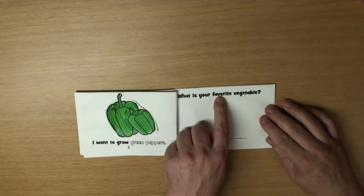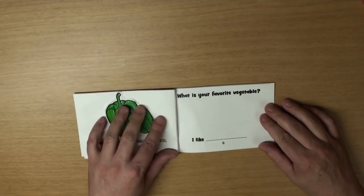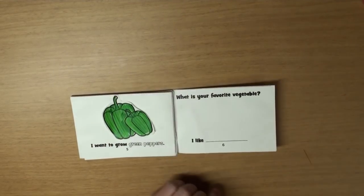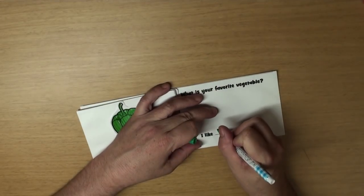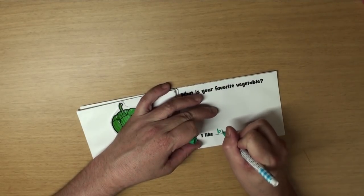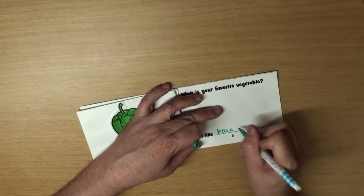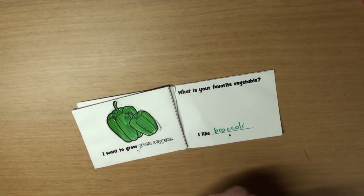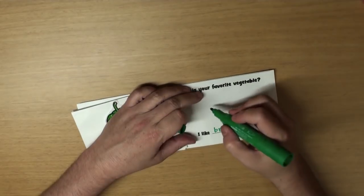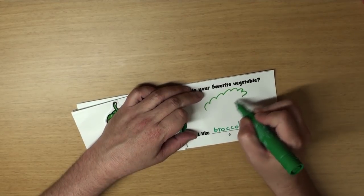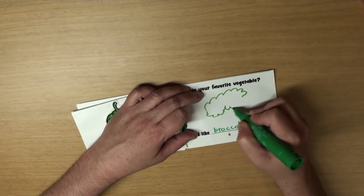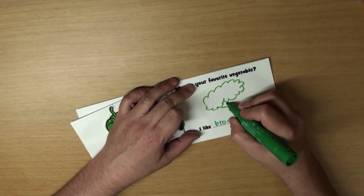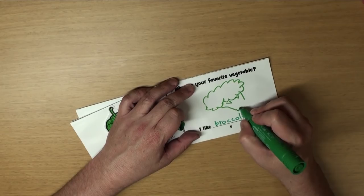I want to grow green peppers. What is your favorite vegetable? Hmm. I know. I like broccoli. Yeah! So I think I'll draw a picture of some broccoli. That looks great!